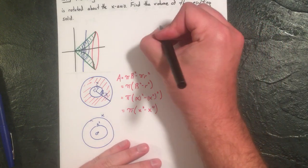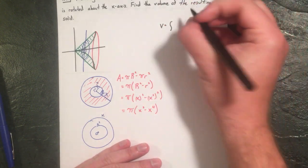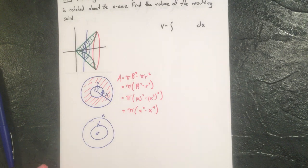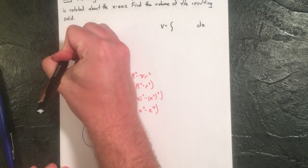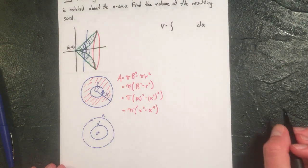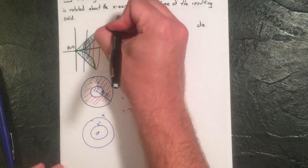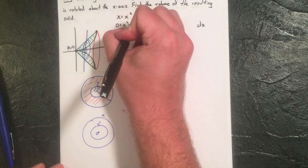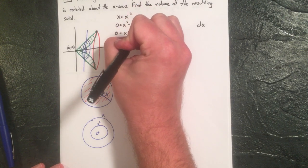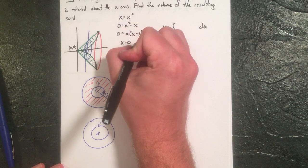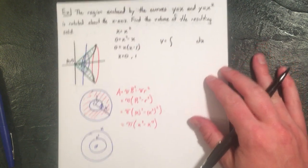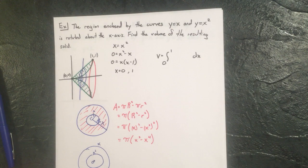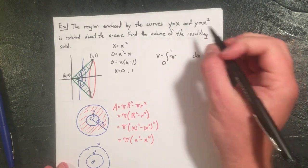Now we need the bounds. The curves meet at (0,0) and at (1,1) — set x = x² to find x = 0 and x = 1. So we integrate from 0 to 1, and our volume is V = π ∫[0 to 1] (x² − x⁴) dx.